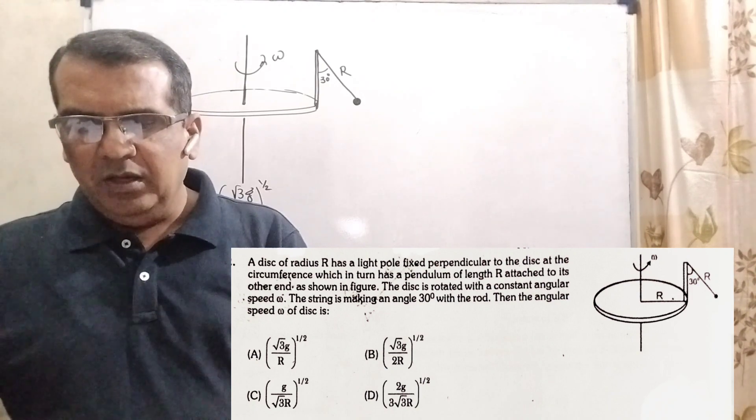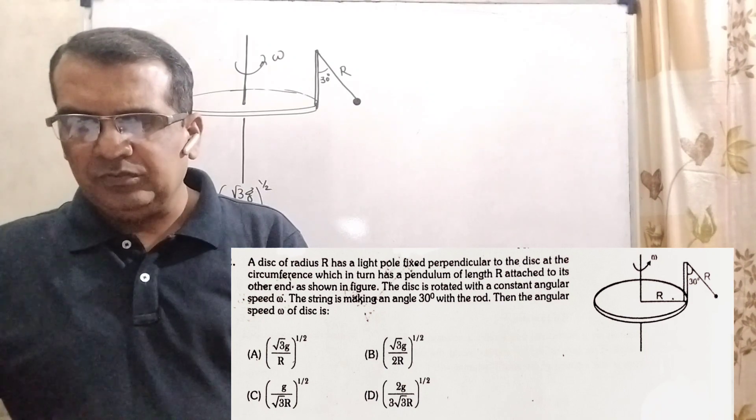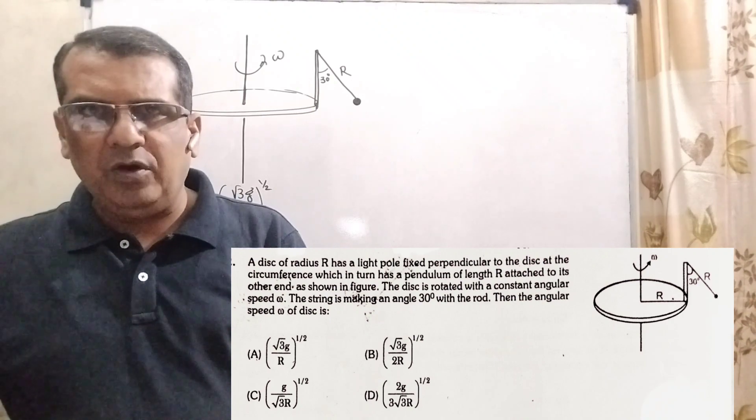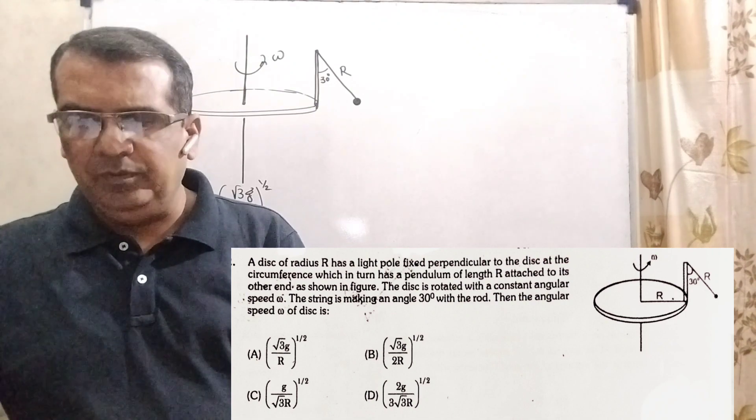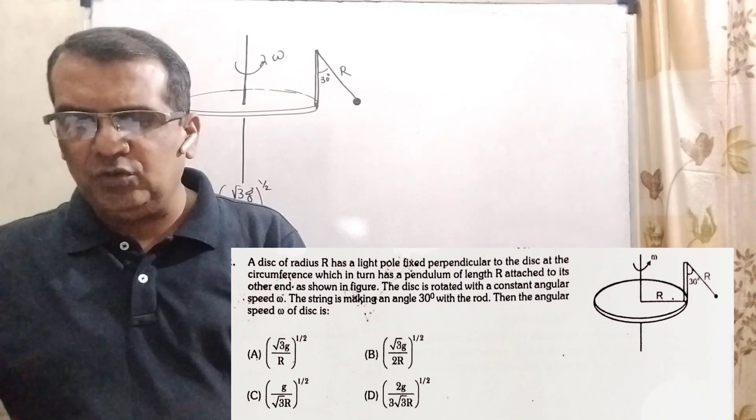The string is making an angle 30 degree with the rod. Then angular speed omega of disc is, here we have given four options. Option A, root 3g by r raised to power 1 by 2. Option B, root 3g by 2r raised to power 1 by 2. Option C, g by root 3r raised to power 1 by 2. Option D, 2g by 3 root 3r raised to power 1 by 2.